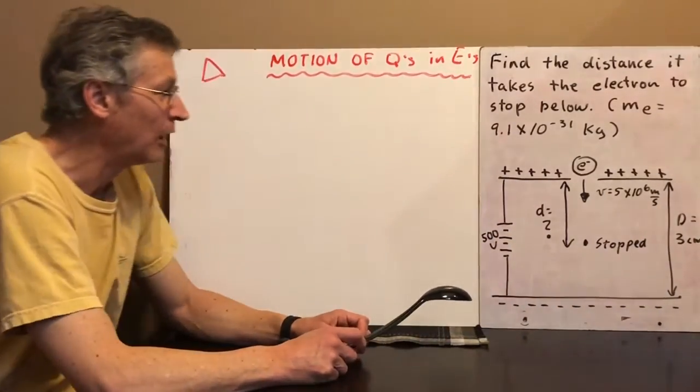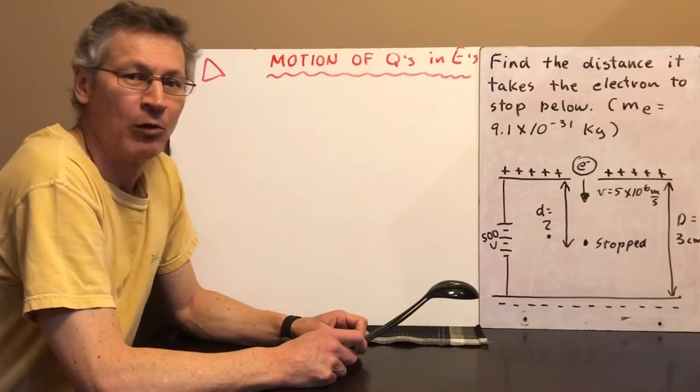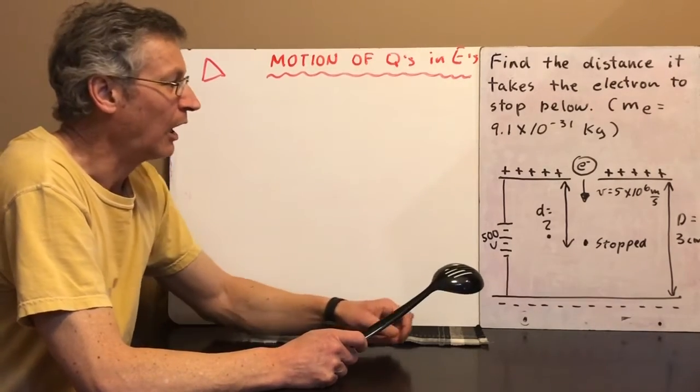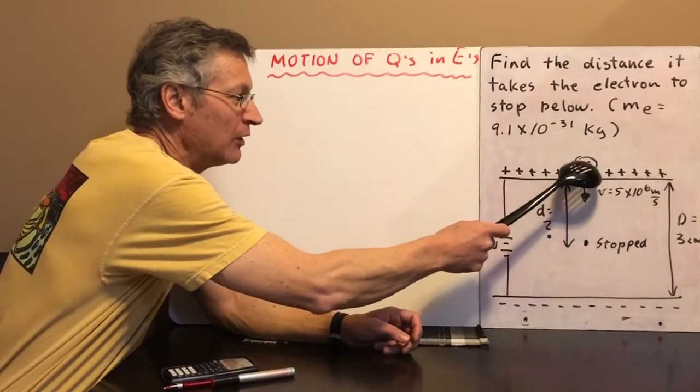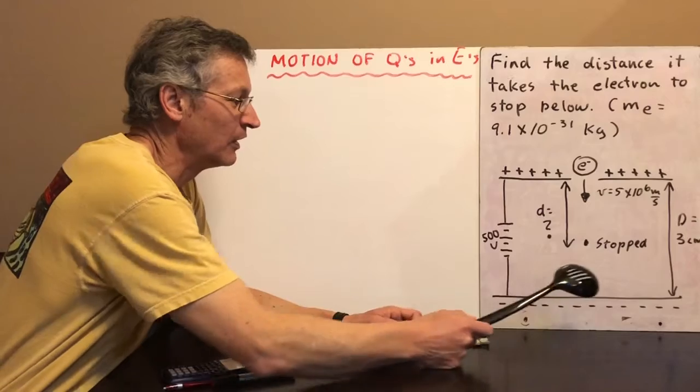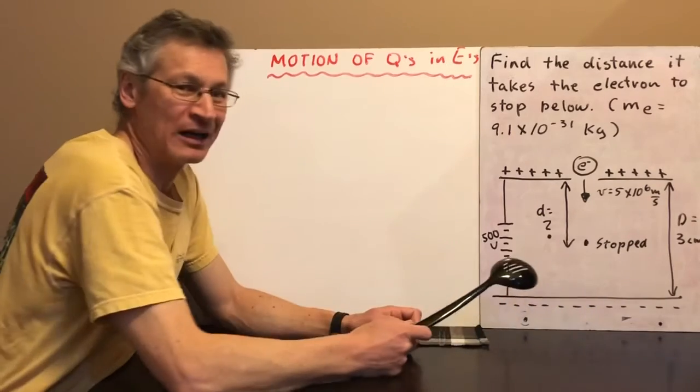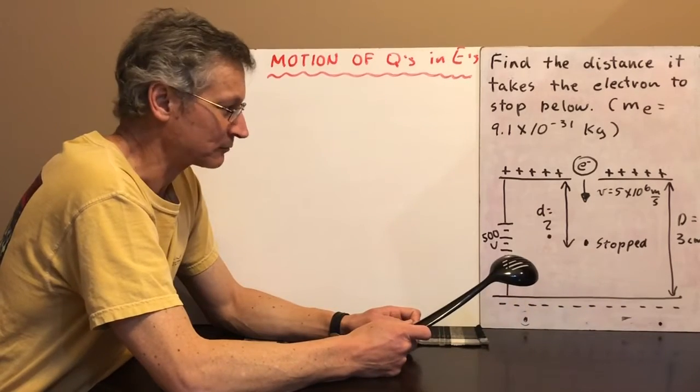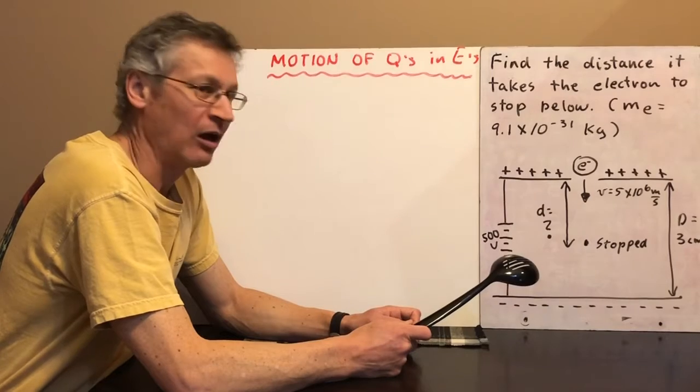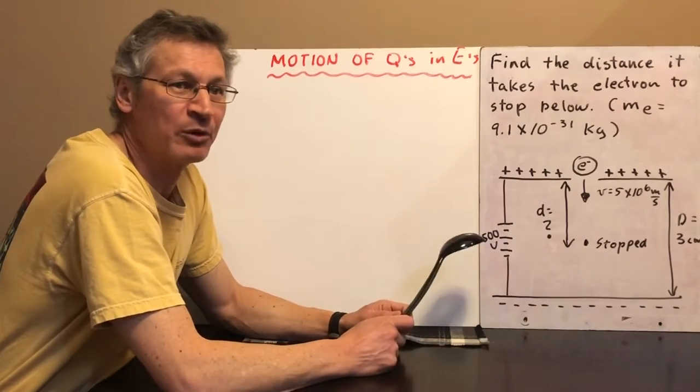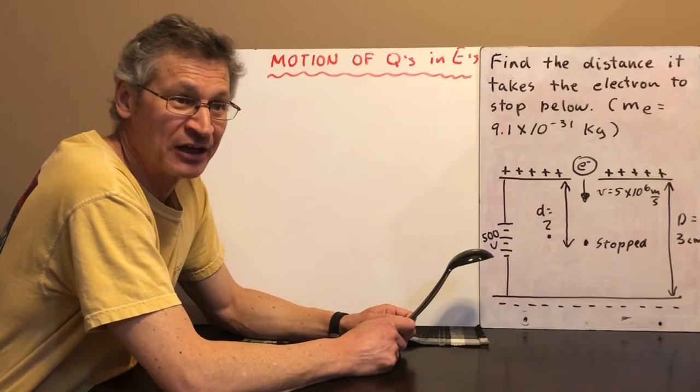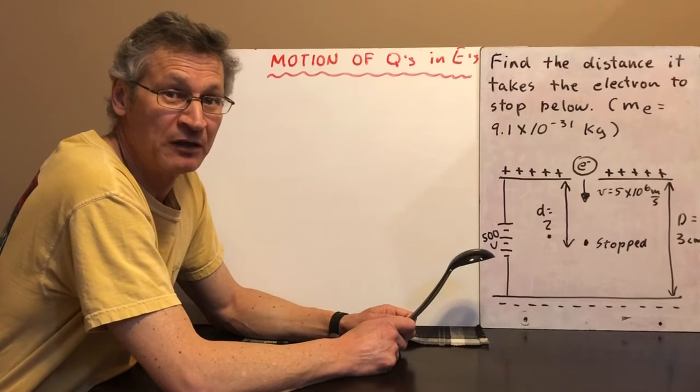So, how can we do this? Well, how about this? The electron, it has a lot of kinetic energy here, it has no kinetic energy here. That's a change in kinetic energy. Remember from the previous unit, if you have a change kinetic energy, usually there's some work being done.